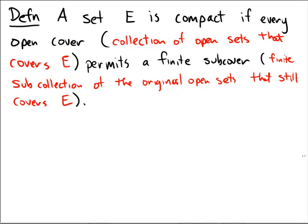So in a two-dimensional type of picture, let's draw us a set here. I'm going to claim that this set right here is compact, and so what this definition is really saying is that if we take a whole bunch of open sets that cover this set,